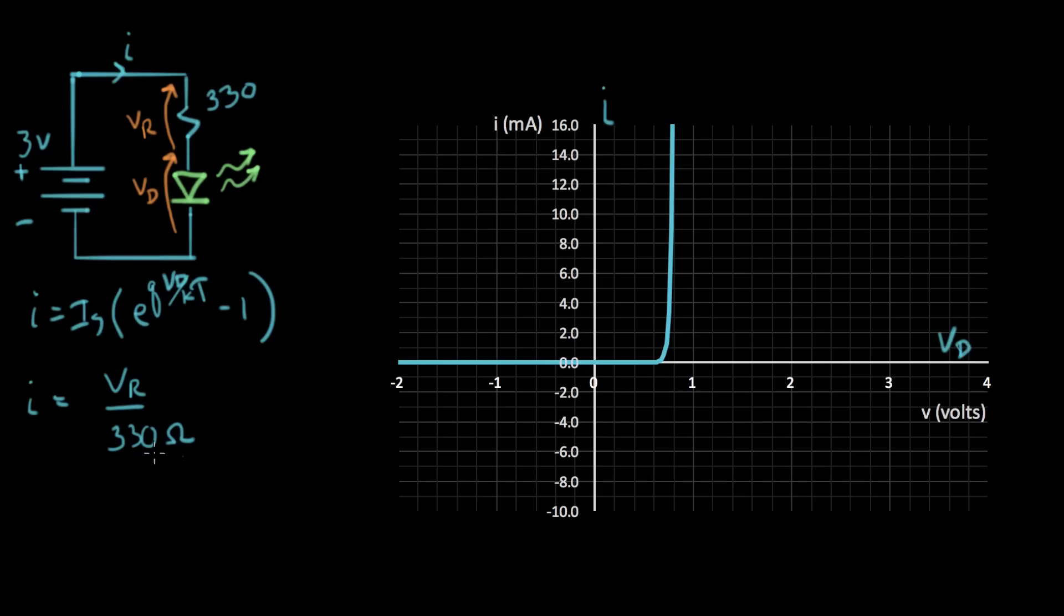And so what I want to do is I want to plot the resistor curve on here as well. I want to plot the resistor IV curve on this same plot. Now in this expression I have VR instead of VD. So let me see if I can work on VR here. Let me try to figure out VR in terms of VD.